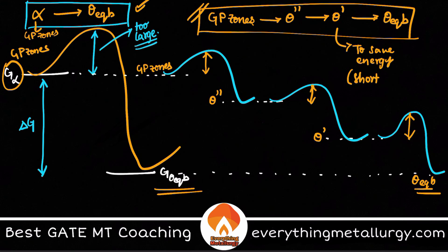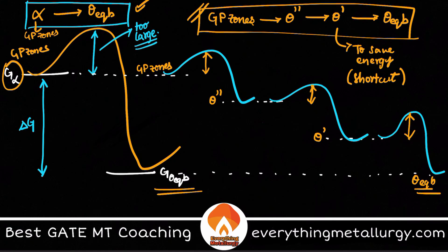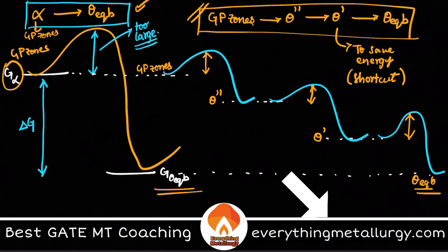I hope you understood why this sequential transformation is actually taking place. The thermodynamic reason is to save energy by taking lower activation barrier intermediate steps. If you liked the video, please hit the like button and share with all GATE Metallurgy aspirants. The next 45 days are going to be crucial — best wishes from the team. Do join our live batch via the link in the description; the deadline is 12 PM tomorrow with no more extensions. See you tomorrow with the next concept — thank you!